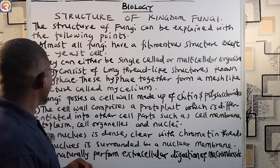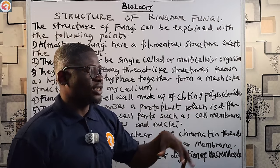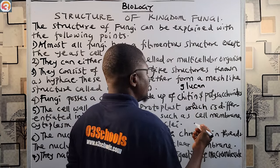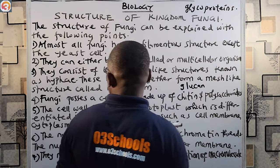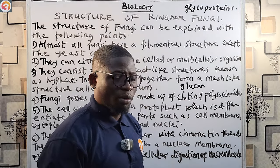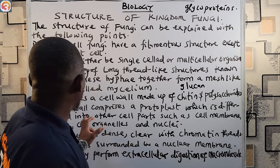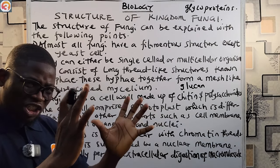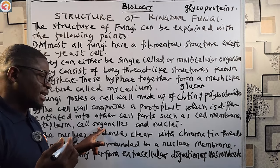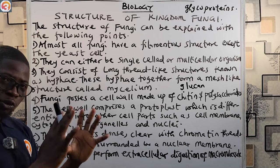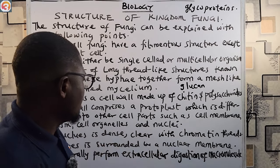Fungi possess a cell wall made up of chitin, polysaccharides, glucan, and glycoproteins. The cell wall comprises a protoplast, which is differentiated into other cell parts such as the cell membrane, the cytoplasm, the cell organelles, and the nuclei.